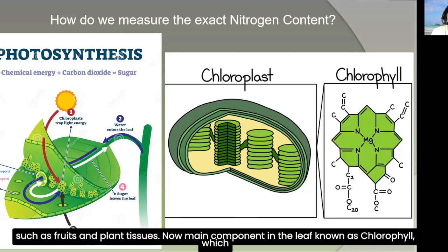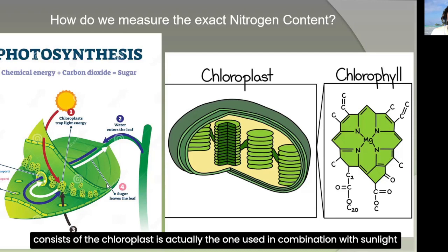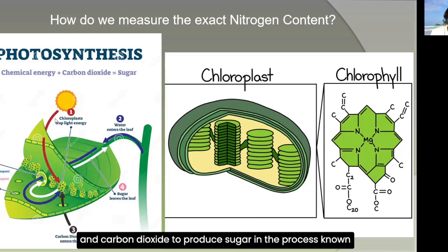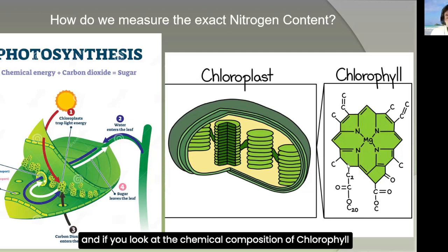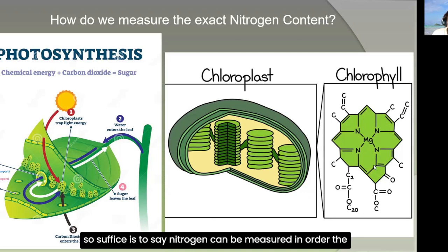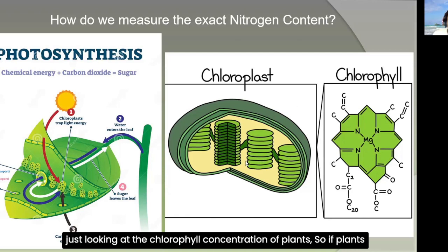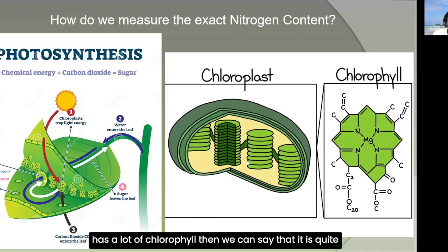The main component in the leaf, known as chlorophyll, is used in combination with sunlight and carbon dioxide to produce sugar in photosynthesis. Photosynthesis relies on chlorophyll, and if you look at the chemical composition of chlorophyll, there is a large concentration of nitrogen. So the nitrogen content of a plant can be indirectly measured by looking at the chlorophyll concentration — if a plant has a lot of chlorophyll, it is quite healthy and has a high presence of nitrogen.